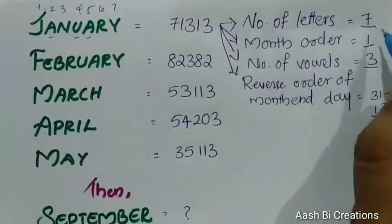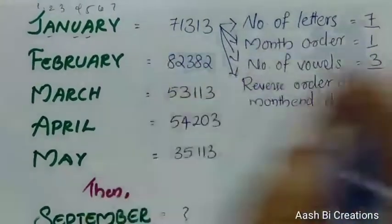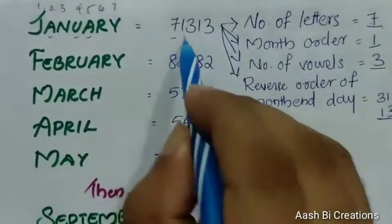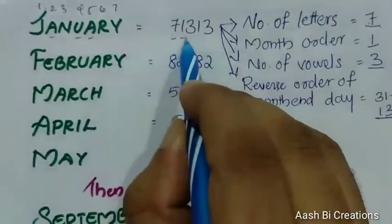Okay, so reverse 1-3: your criteria is correct. So we get 7, 1, 3.